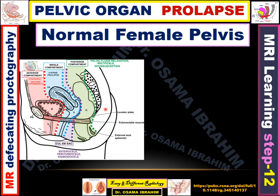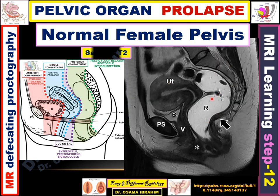This diagram represents the normal female pelvis in sagittal view. The female pelvis is classified into three compartments: the anterior compartment containing the urinary bladder and urethra; the middle compartment containing the uterus, cervix, and vagina; and the posterior compartment containing the rectum, anorectal junction, and anus. All three compartments can prolapse through the pelvic floor. On sagittal T2 MRI, the bladder and uterine cavity fluid appear as high signal. The anterior compartment is represented by the bladder and urethral orifice; the middle by the uterus, cervix, and vagina; the posterior by the rectum and anorectal junction.